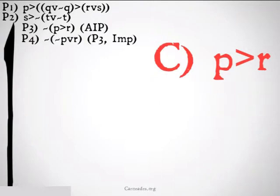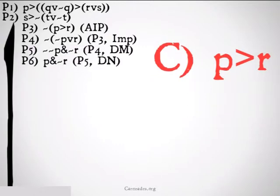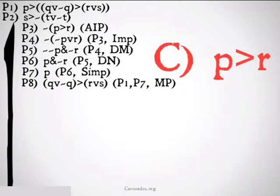What can this let us do? We'll use implication to turn it into a disjunction so we can use De Morgan's rule on it — to get not (not P) and not R from this, 4 De Morgan's. We double negate it down to P and not R — premise 5 double negation. We can then simplify it down to P. P allows us to use modus ponens on premise 1, so we can conclude Q or not Q implies R or S — premise 1, premise 7 modus ponens.